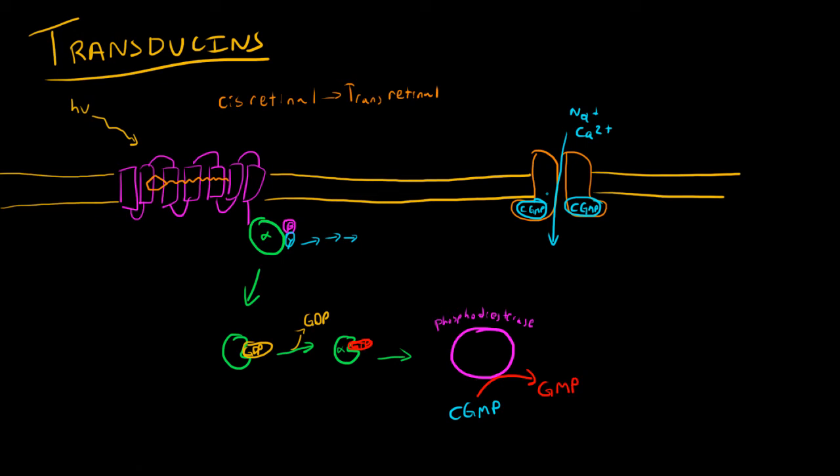So by doing this, we are basically depleting the cytosolic levels of cyclic GMP. This goes down and what this does is essentially shuts down this particular ion channel just because we're depleting it of its ligand. And so if we're shutting down this particular ion channel, we're stopping the influx of sodium and calcium. And what we get is actually a hyperpolarization of this cell.